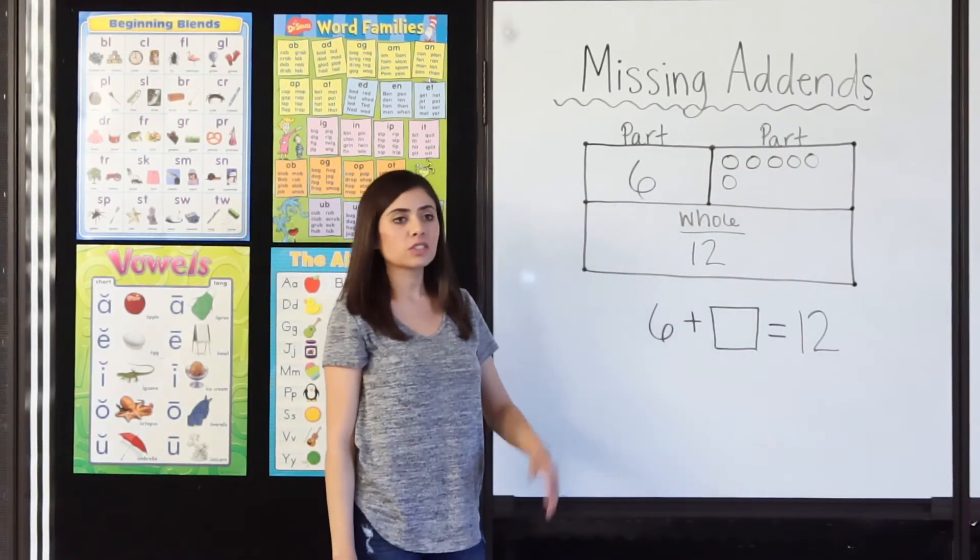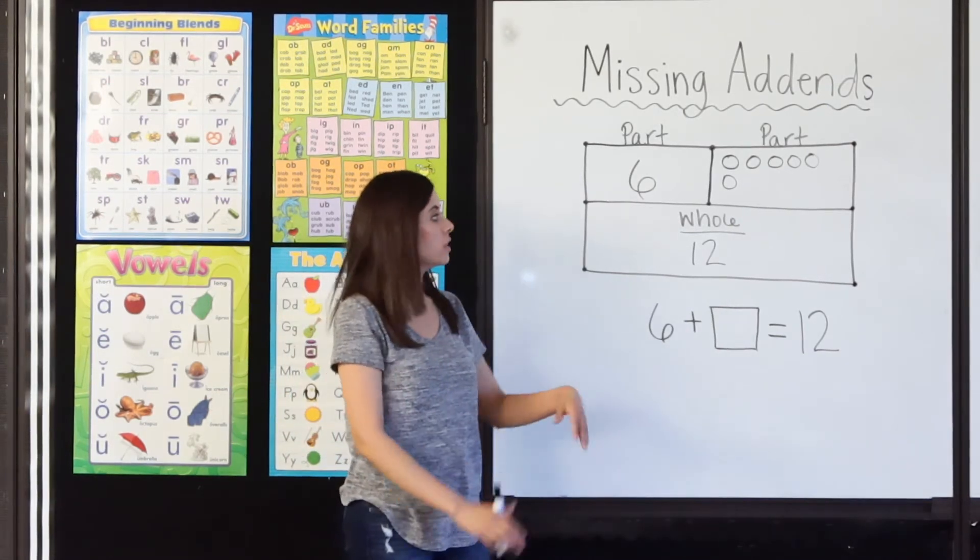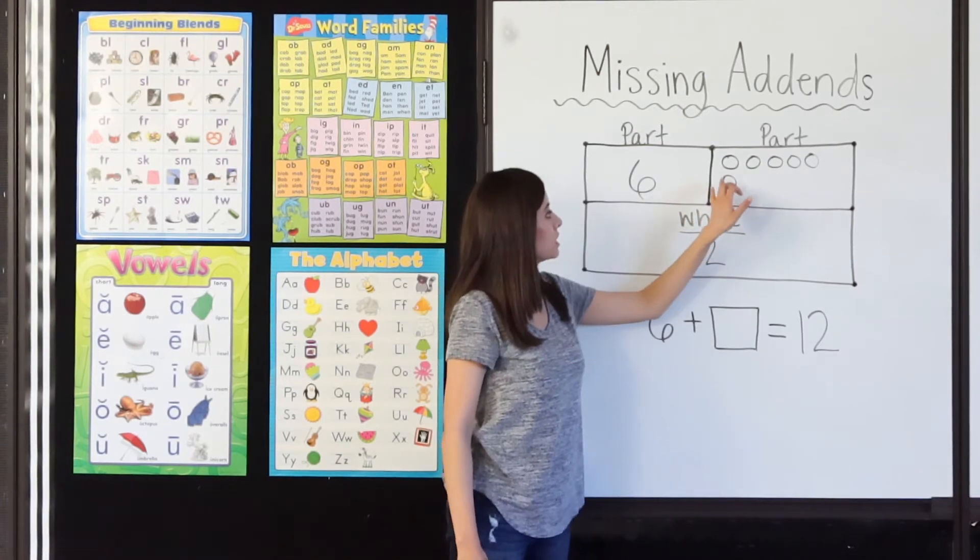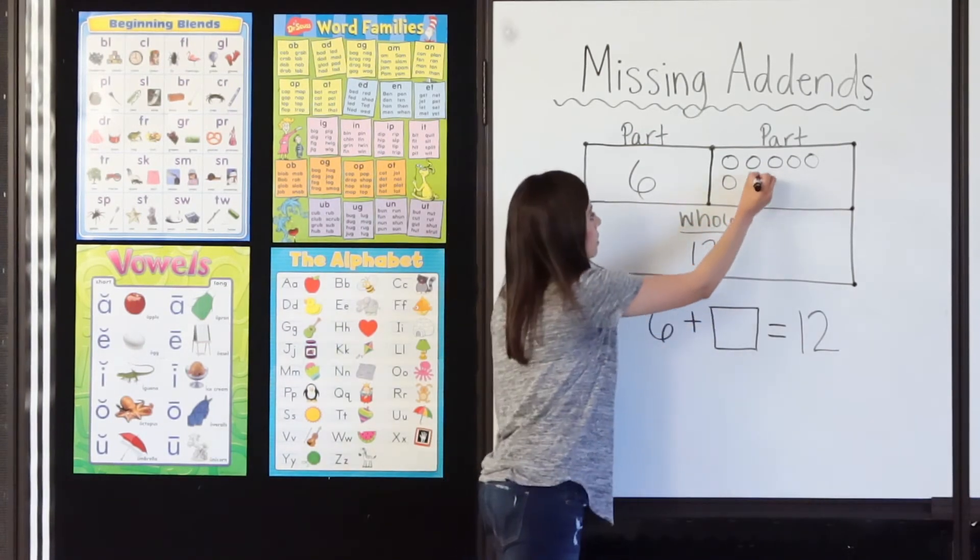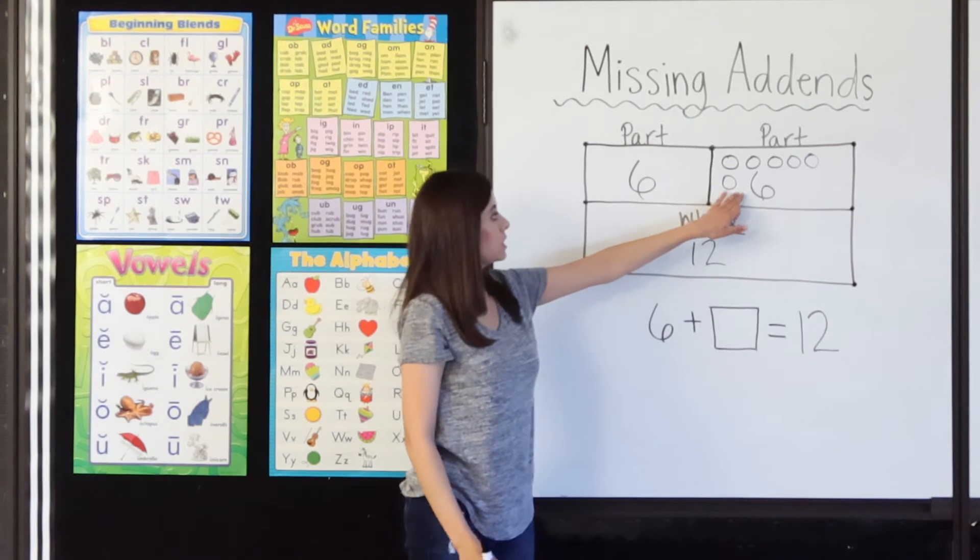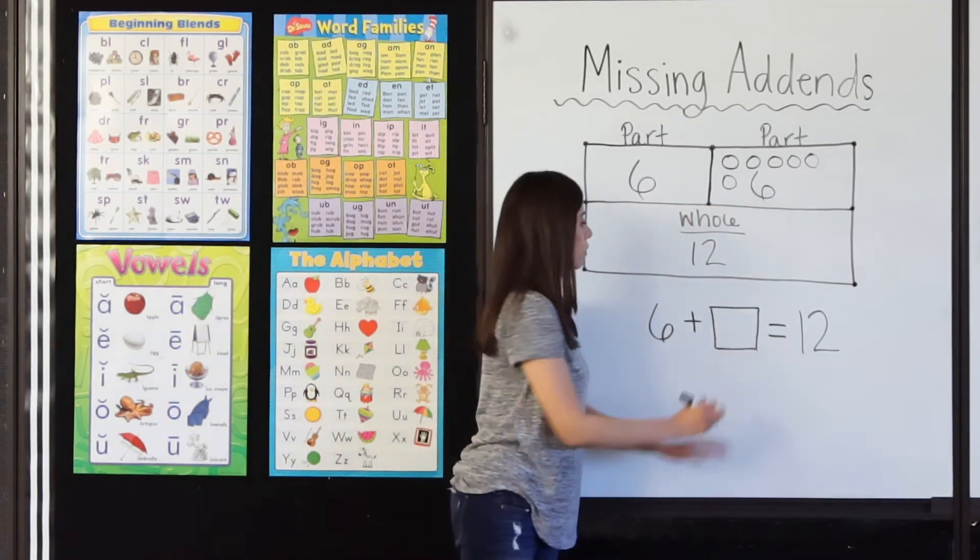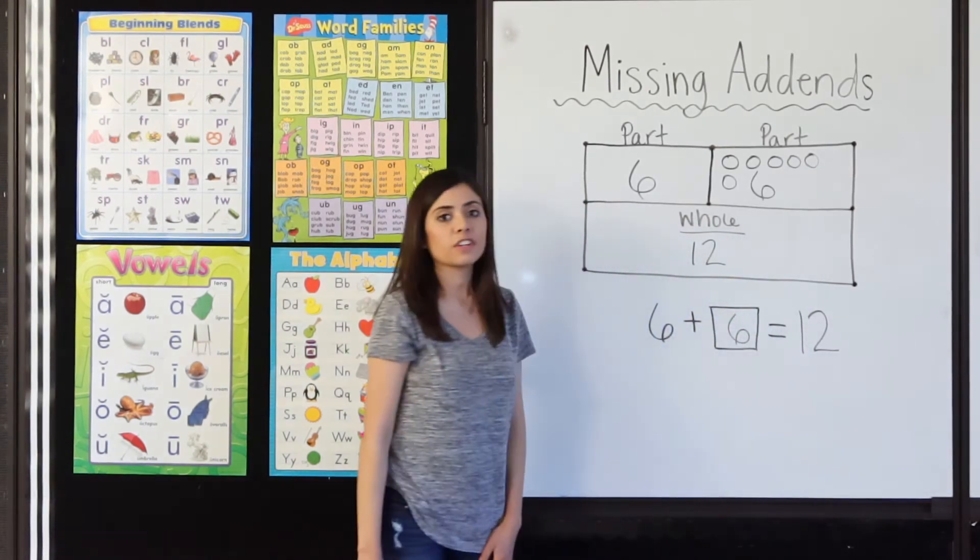How many circles did it take to get from 6 to 12? 1, 2, 3, 4, 5, 6. 6 plus 6 equals 12. 6 plus 6 equals 12. Very good.